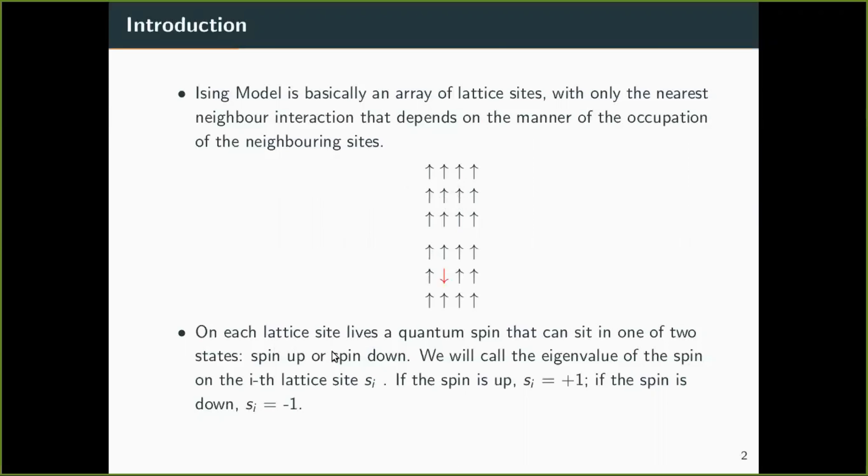On each lattice site lives a quantum spin that can sit in either spin up or spin down. Like the red lattice site that I have marked is spin down and this is spin up. If it is spin up, we say the eigenvalue is plus one and if it is spin down, we say the eigenvalue is minus one.